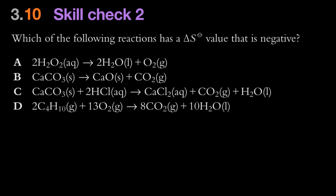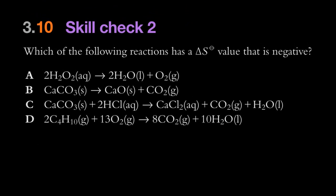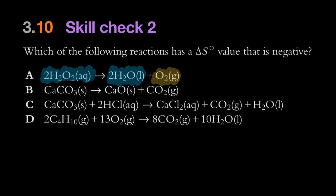Now a skill check with more complex examples. In part A: two moles of aqueous producing two moles of liquid and one mole of gas. The gas is the key — since the products have one more mole of gas than the reactants, delta S is going to be positive because entropy is increasing.